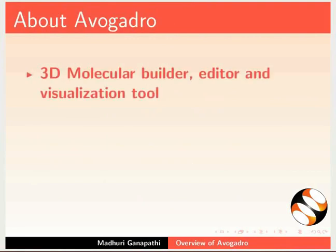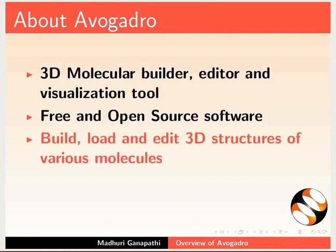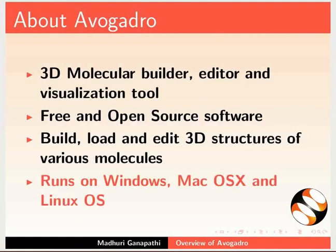Avogadro is a 3-dimensional molecular builder, editor and visualization tool. It is free and open source software. We can build, load and edit 3D structures of various molecules. It runs on Windows, Mac OS X and Linux operating systems.